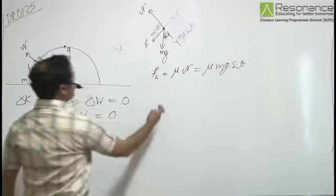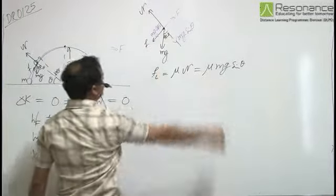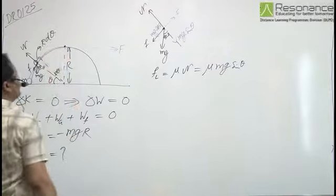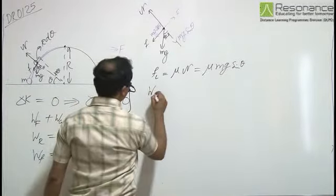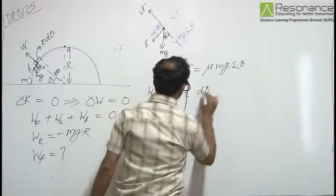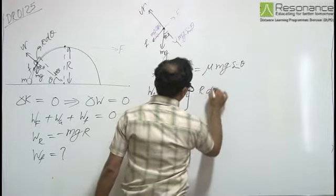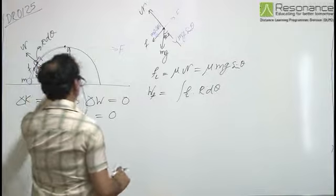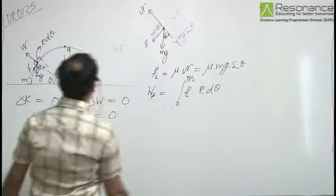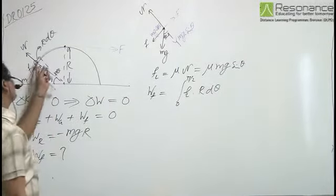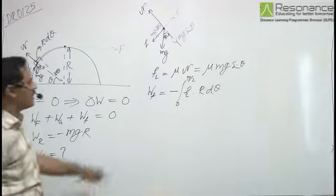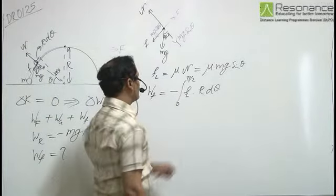So work done by this frictional force, as the body is getting displaced upward, the displacement is R d theta. So work done by frictional force is frictional force into the displacement R d theta, and angle theta is varying from 0 to pi by 2. As frictional force and displacement are in opposite direction, work done by friction is minus integration 0 to pi/2 of frictional force into R d theta.